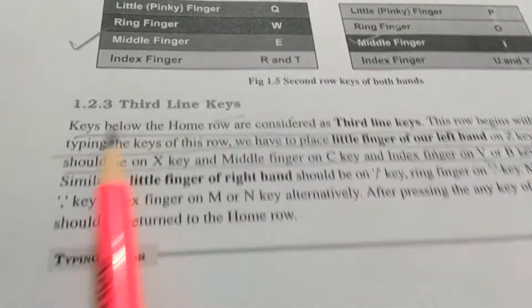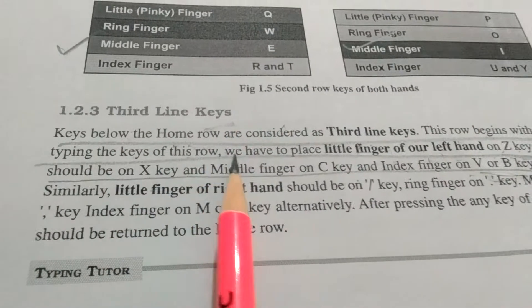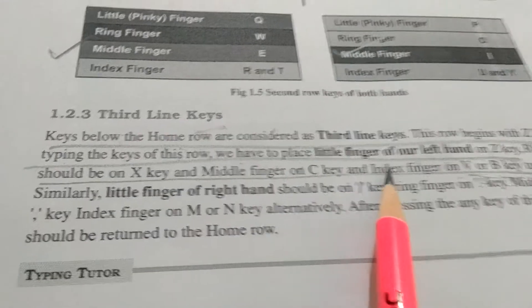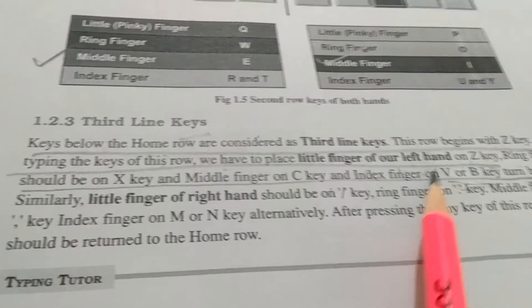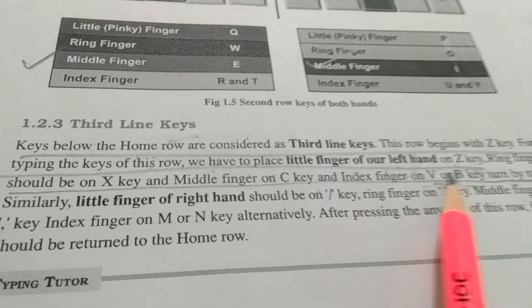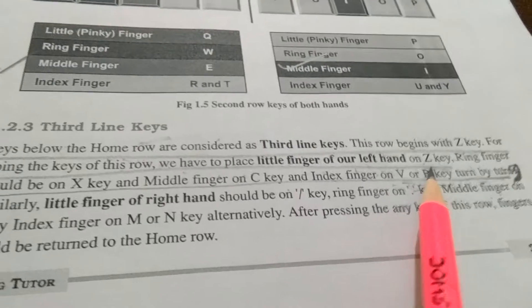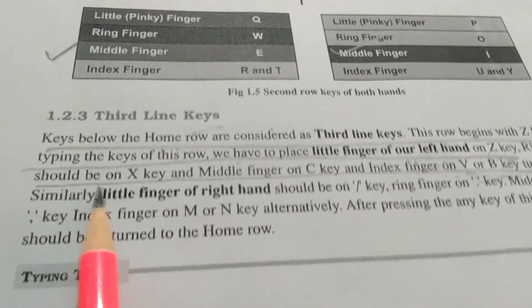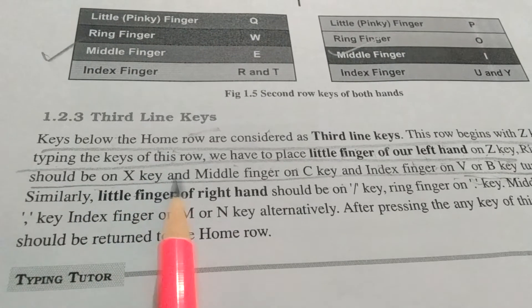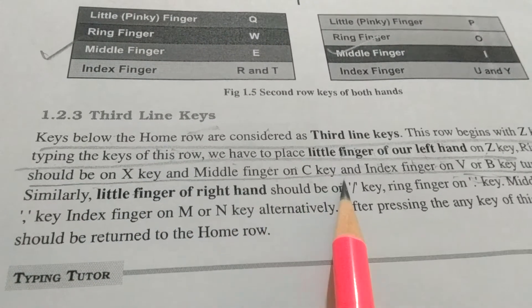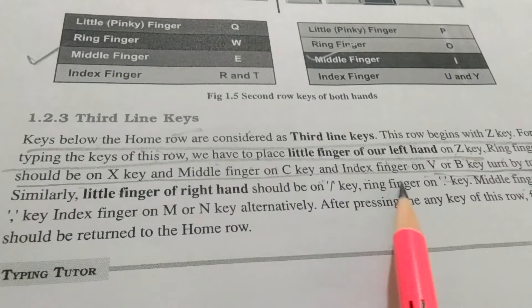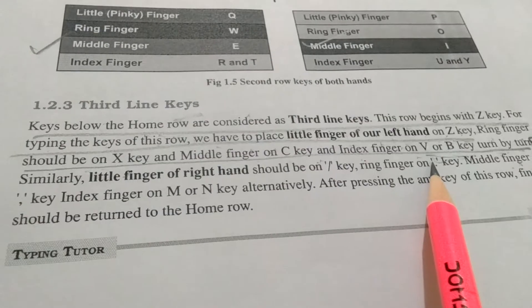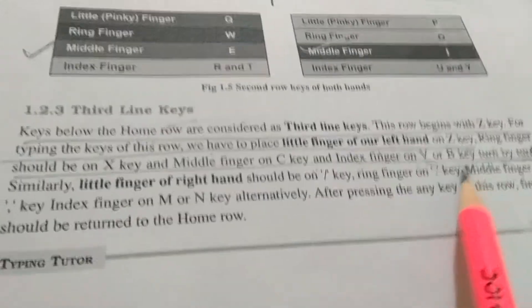For typing the keys of this row, we have to place the little finger of our left hand on the Z key, ring finger on the X key, middle finger on the C key, and index finger on the V and B keys alternately.